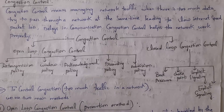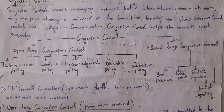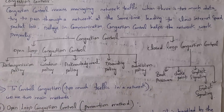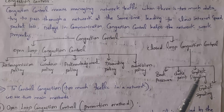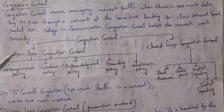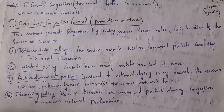Congestion control is divided into two types: open loop congestion control and closed loop congestion control. Retransmission policy, window policy, acknowledgement policy, discarding policy, and admission policy all belong to open loop congestion control. Whereas back pressure, choke packet, implicit signaling, and explicit signaling all belong to closed loop congestion control.